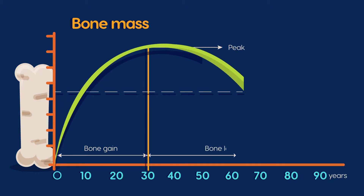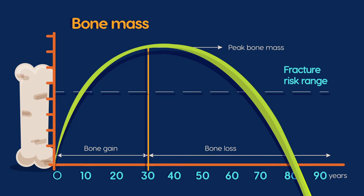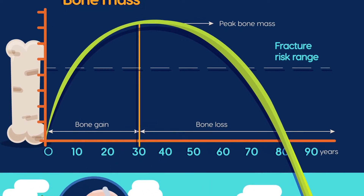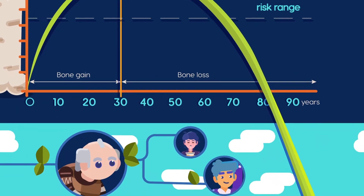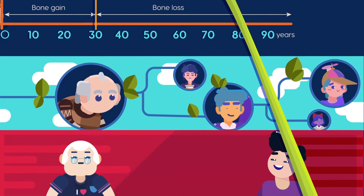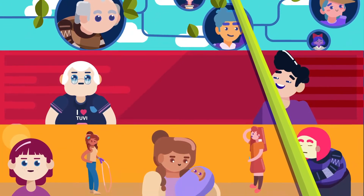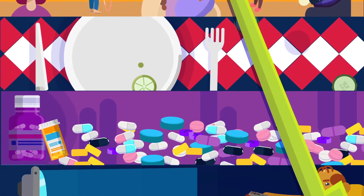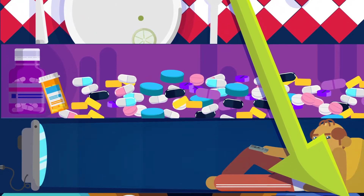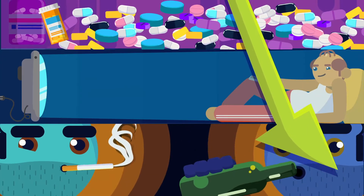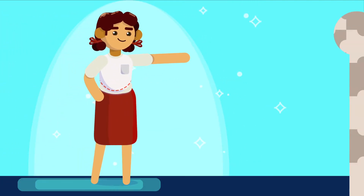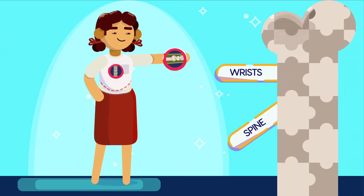Our peak bone density determines how quickly we can develop osteoporosis in old age. Some risk factors for having low peak bone mass include family history of osteoporosis, being white or Asian, being female, having a poor diet, taking steroids or seizure medications, lack of exercise, and smoking or drinking too much.